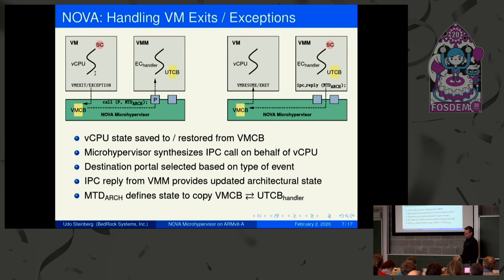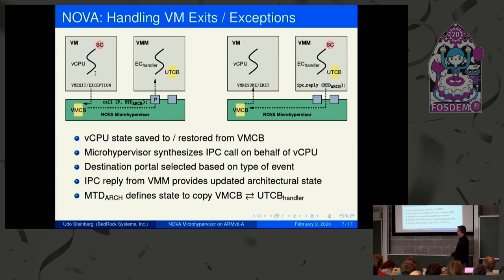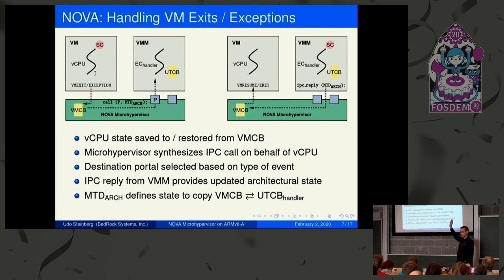The MTD arc works similarly to the standard MTD — it copies state between VMCB and UTCB rather than between two UTCBs. The same scheduling context principle applies: all accounting of the emulation goes onto the scheduling context of the vCPU.